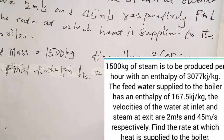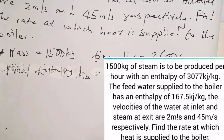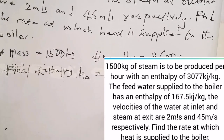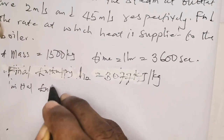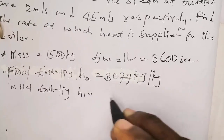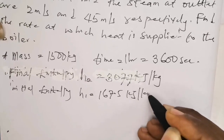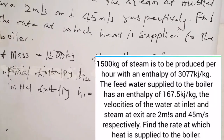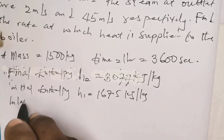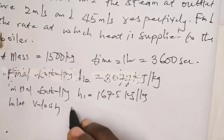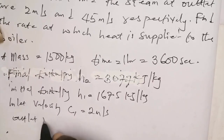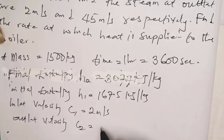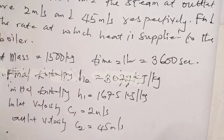The feed water supplied to the boiler has an enthalpy of 167.5 kilojoules per kilogram — this is the initial enthalpy, H1 = 167.5 kJ/kg. The velocities of water at inlet and steam at outlet are given: inlet velocity C1 = 2 meters per second, and outlet velocity C2 = 45 meters per second.